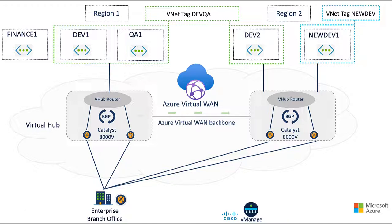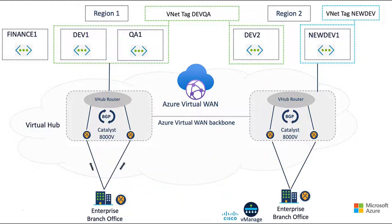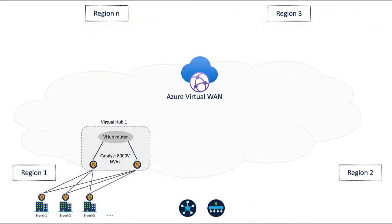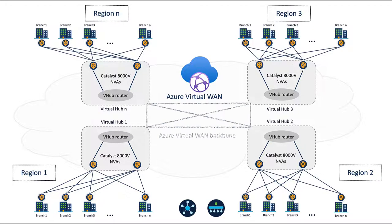Our customer may prefer that some applications ingress and egress the cloud at the point of presence closest to the branch and ride the Azure Virtual WAN backbone across regions, whereas other applications should ingress and egress the cloud at the point of presence closest to the workload. We can also create centralized policies to allow branch-to-branch communication across regions using the Azure Virtual WAN backbone, scaling to thousands of branches across dozens of Azure regions, all globally connected.